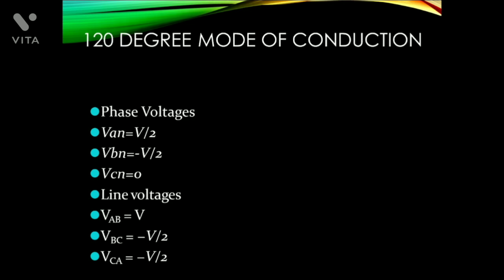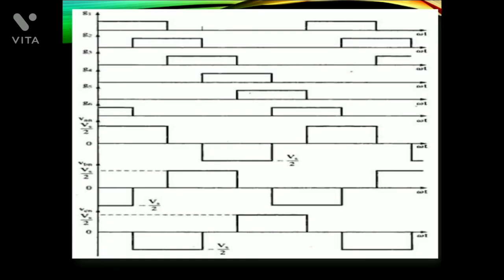Now the 120-degree mode of conduction. The phase voltages are: Van = V/2, Vbn = -V/2, and Vcn = 0. The line voltages are: Vab = Vbc = -V/2 and VcA = -V/2. These are the waveforms of gate triggering pulses and phase voltages Van, Vbn, and Vcn.